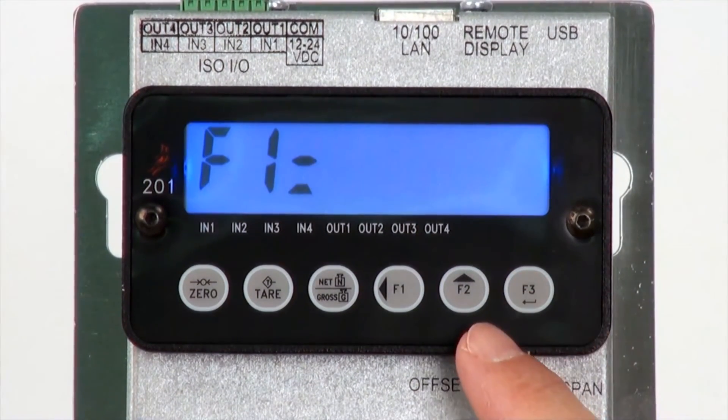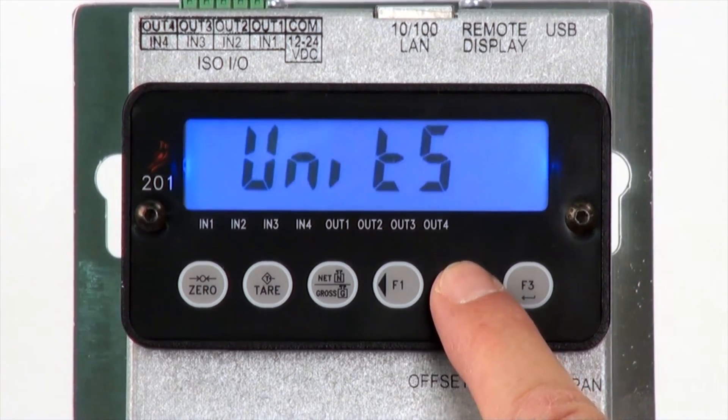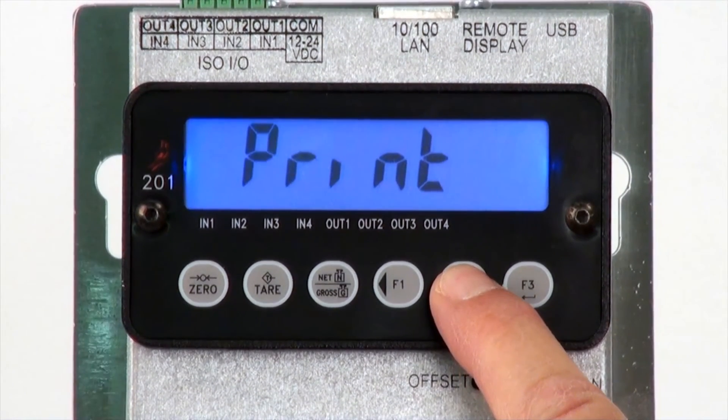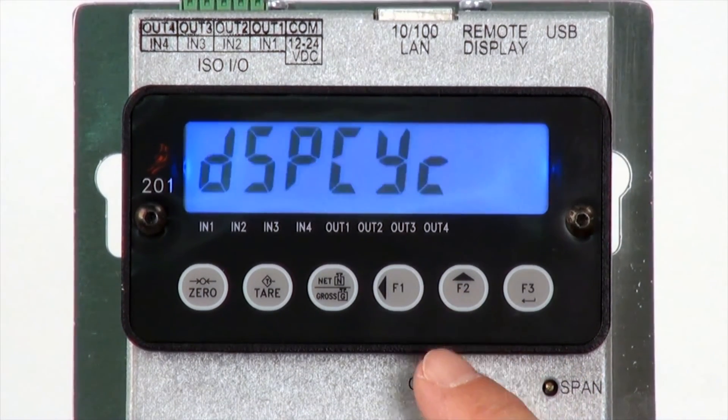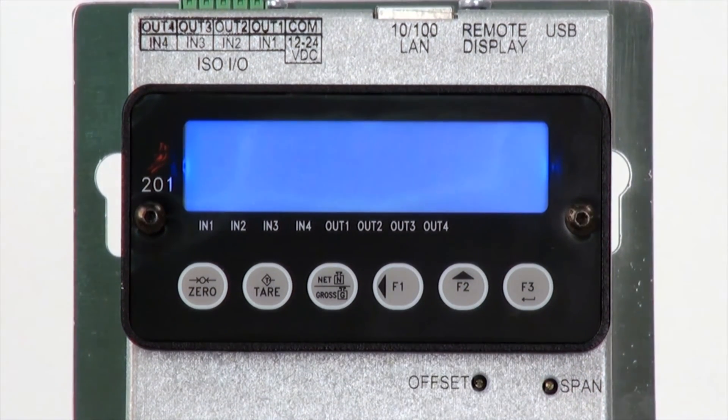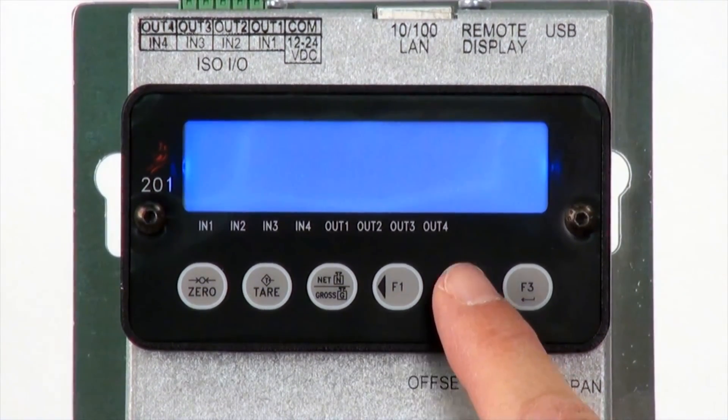The function keys may be configured as units for toggling between the selected weighing units, print if connected with the printer, display cycle which can select things other than weight such as time, date, or millivolt input, or you can disable the function key entirely.